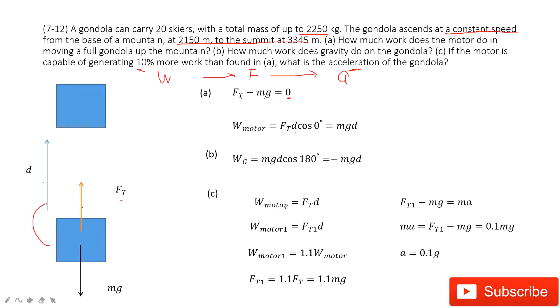So you can see, at the beginning, the work done by the motor is Ft times d. Now we do 10% more work. So the force becomes Ft1 times d. Because this displacement is the same.